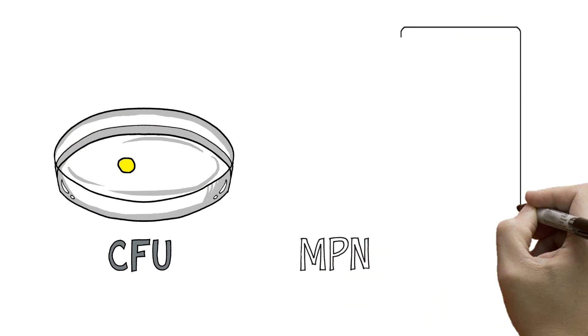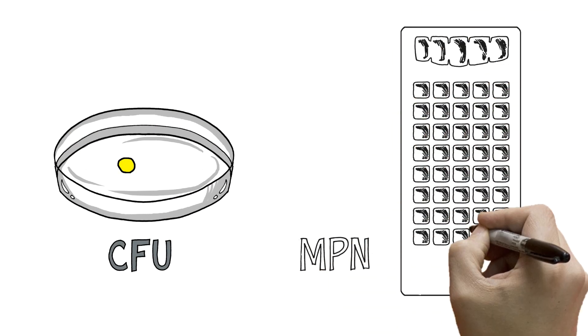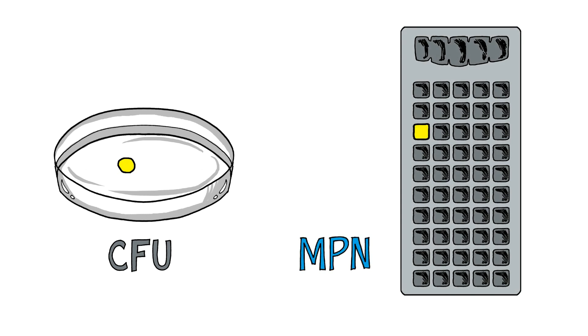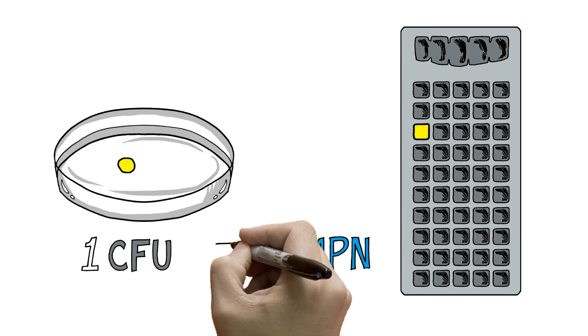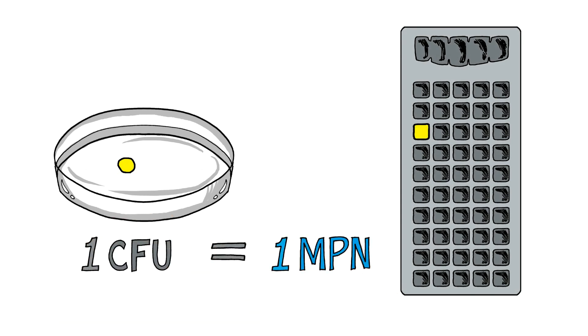For an MPN measurement, samples grown in a liquid medium are separated into wells. Positive wells are then counted, and an MPN conversion table is used to generate a numeric result.